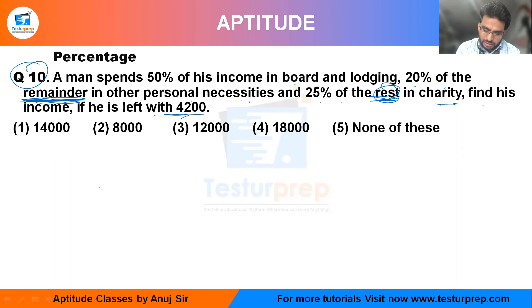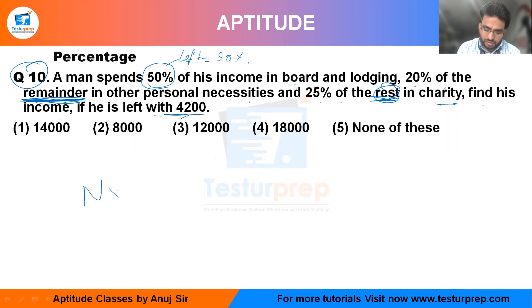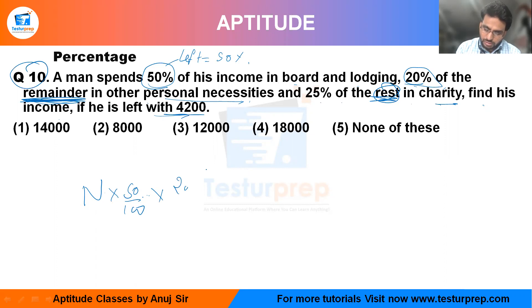Let me take the income. First of all, he spent 50%, so what is the left value? He is left with only 50%. Then 20% is spent on personal necessities — that means 20% of that remaining 50%.